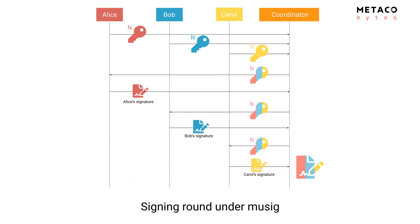Looking at the interaction needed for signing with MuSig: first, Alice, Bob, and Carol all send their public nonce to a coordinator. Then, when they want to sign, they receive the combined nonce, produce their partial signature, and send it to the coordinator. Of course, you can do this without a coordinator by having everyone send to each other, but in this example I will use a coordinator.